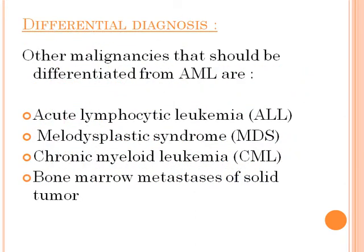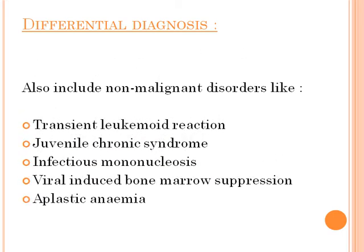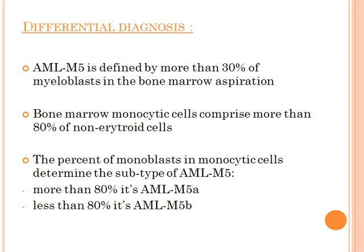For differential diagnosis, other malignancies that should be differentiated from AML include acute lymphocytic leukemia, myelodysplastic syndrome, chronic myeloid leukemia, and bone marrow metastasis of solid tumors. Non-malignant disorders to consider include transient leukemoid reaction, juvenile chronic syndrome, infectious mononucleosis, viral-induced bone marrow suppression, and aplastic anemia.